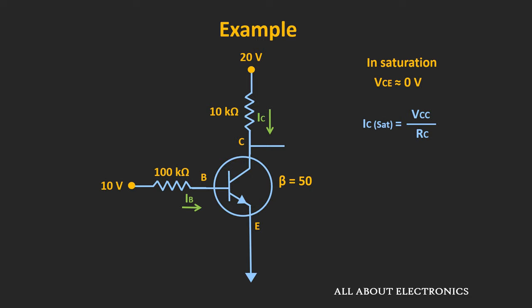For the given circuit, let's find out whether it is operating in the active region or the saturation region. First, we will assume that in saturation the voltage Vce is equal to 0. And for the given values of Vcc and Rc, the saturation current Ic(sat) is equal to 20V divided by 10kΩ, that is equal to 2mA.